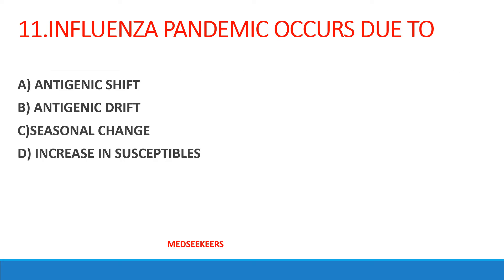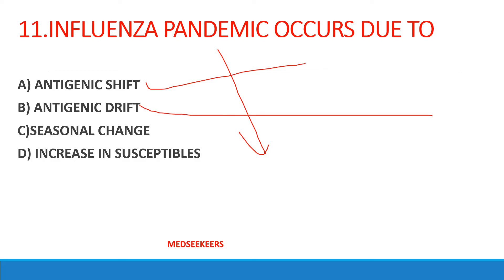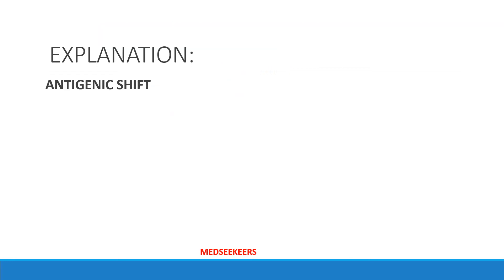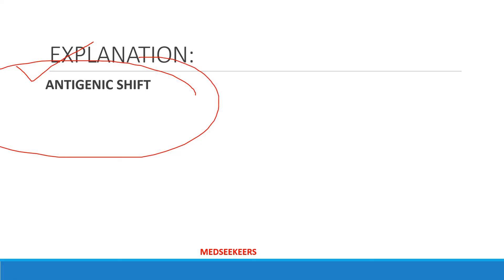Next question: influenza pandemic occurs most commonly due to — antigenic shift, antigenic drift, seasonal changes, or increasing susceptible host? You would have studied antigenic shift and drift in detail in microbiology. Your answer should be antigenic shift. Many influenza pandemics occur because of antigenic shift, which involves mixing of genes from influenza viruses of different species. Please read about antigenic shift and drift — it's really important.